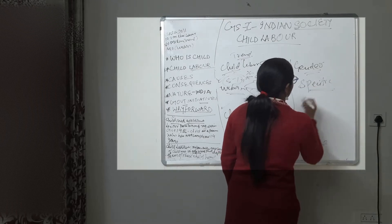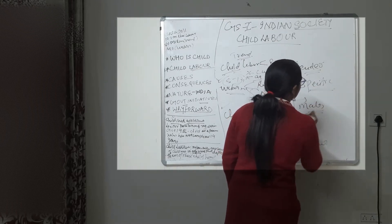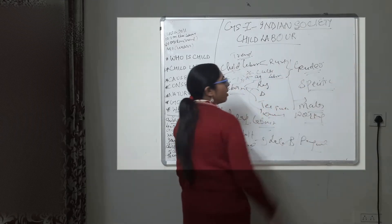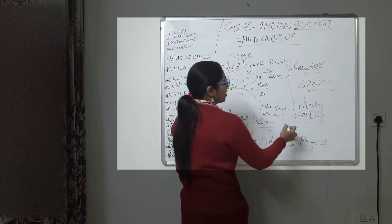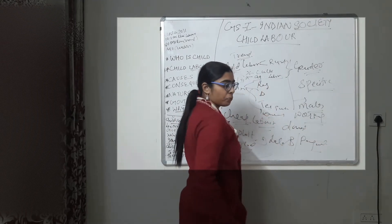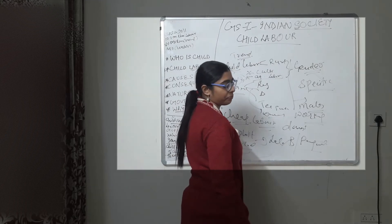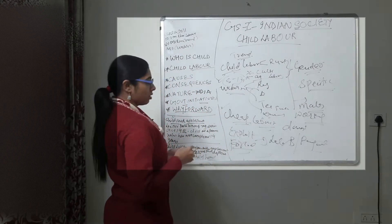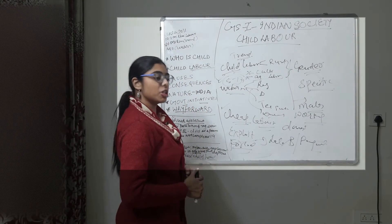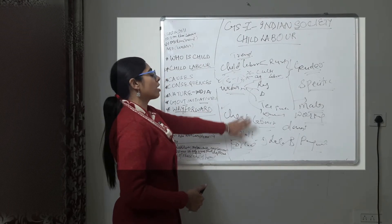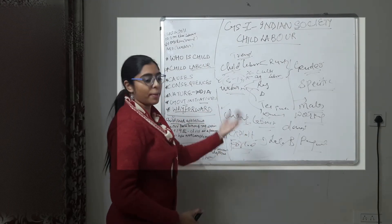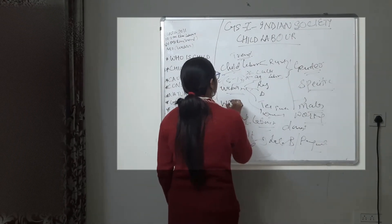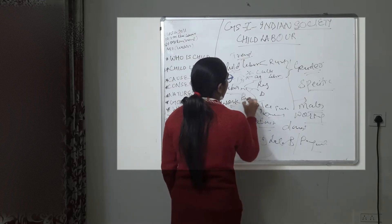This division of labor is also gender-specific. Male children mostly work as daily wage earners, while girls are forced to work as domestic servants. Child labor is cheap - you can extract a lot of work from them, exploit them, and pay very little or nothing. Work without payment or enumeration is called बेगार.